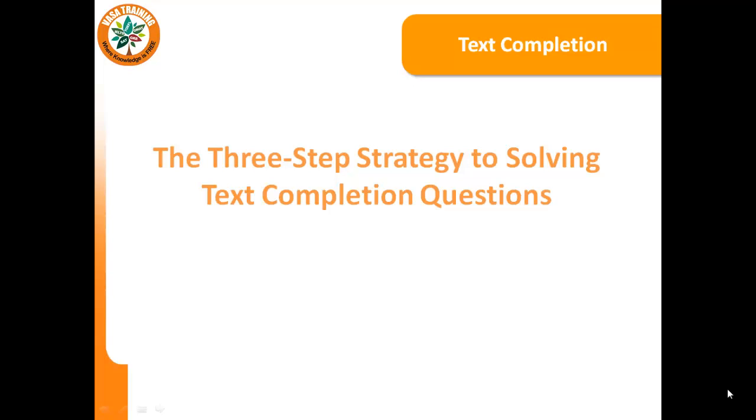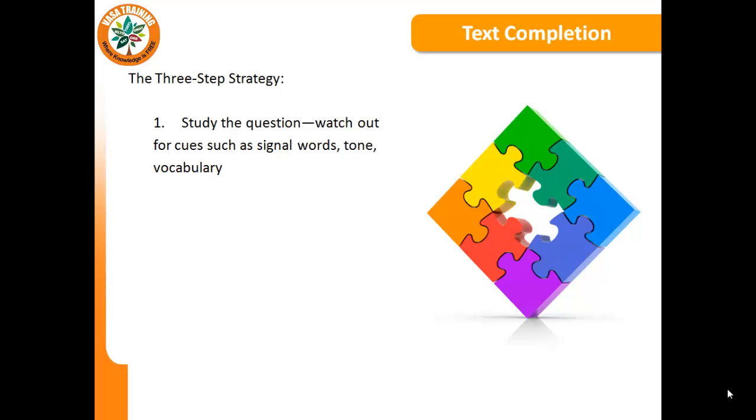Let's take a look at what we call the three-step strategy to solving text completion questions. In the previous section, we were looking at the analogy of a text completion question as a jigsaw puzzle with a missing piece, and we were talking about how to predict the color of the pieces. In text completion, what we call colors in a jigsaw puzzle might correspond to things such as signal words, tone, and vocabulary.